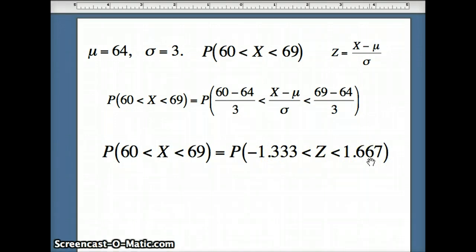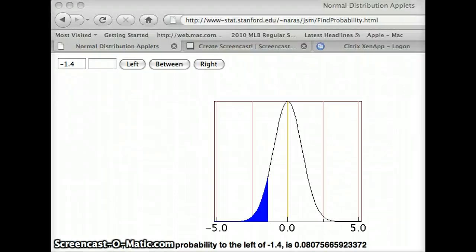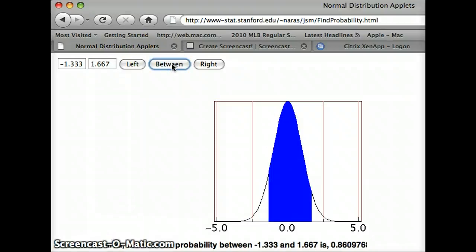So to get this probability, I can pull up my applet and see how that's going to work. We're going to want between this time. We want negative 1.333 and 1.667 approximately. We want to get between those numbers. And what does that give us? That gives us 0.860976 or about 0.861.